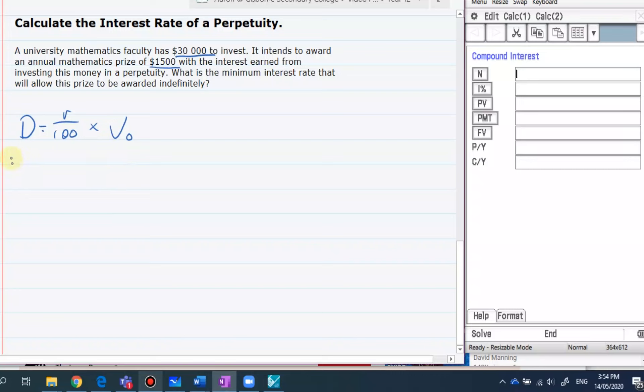So it looks something like this. 1,500 is equal to R over 100 times V0 which is 30,000.